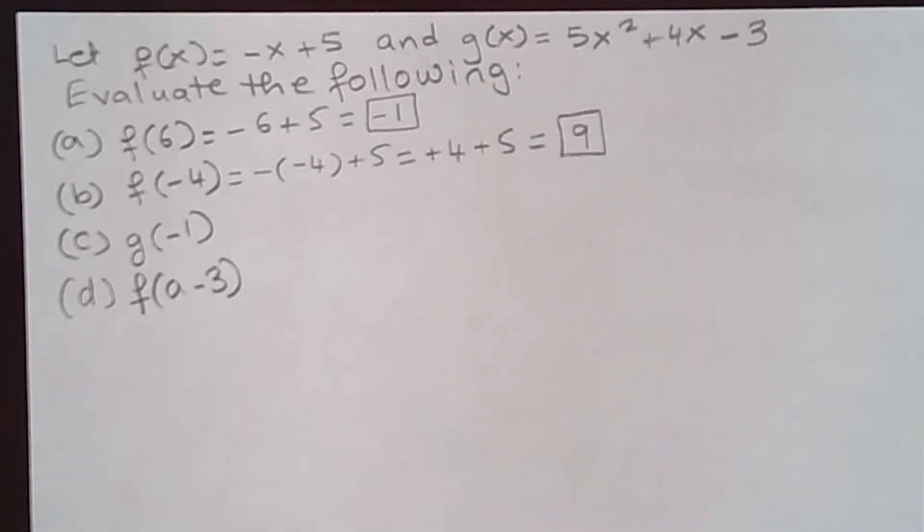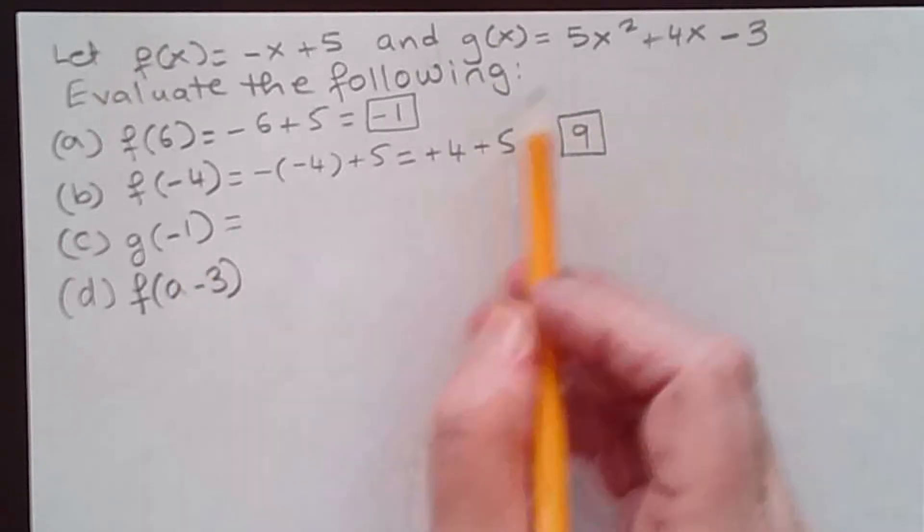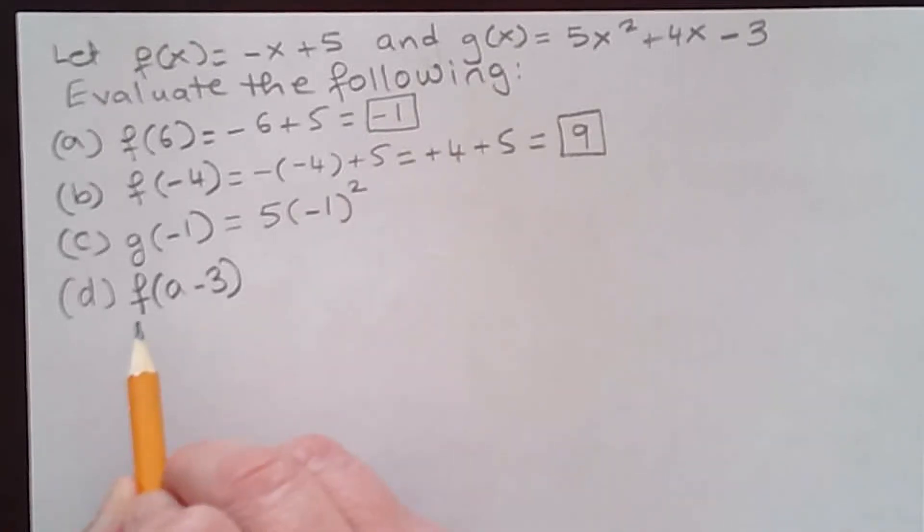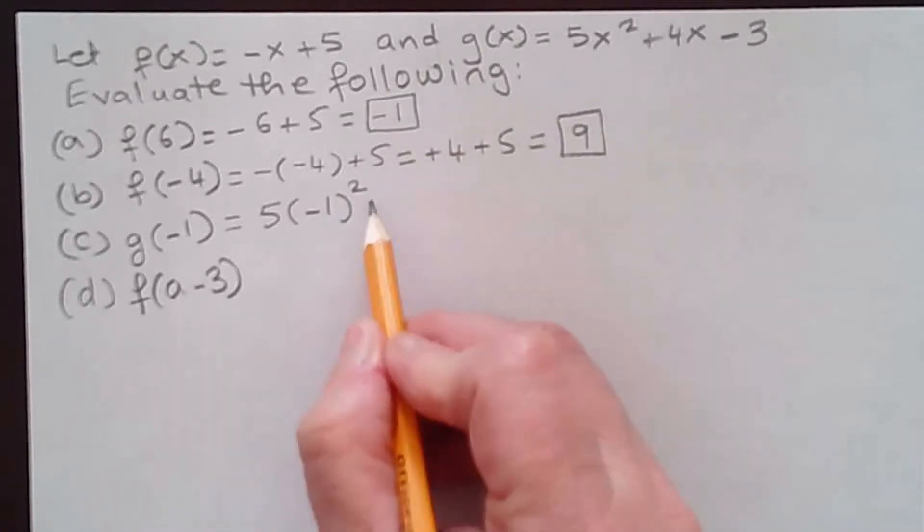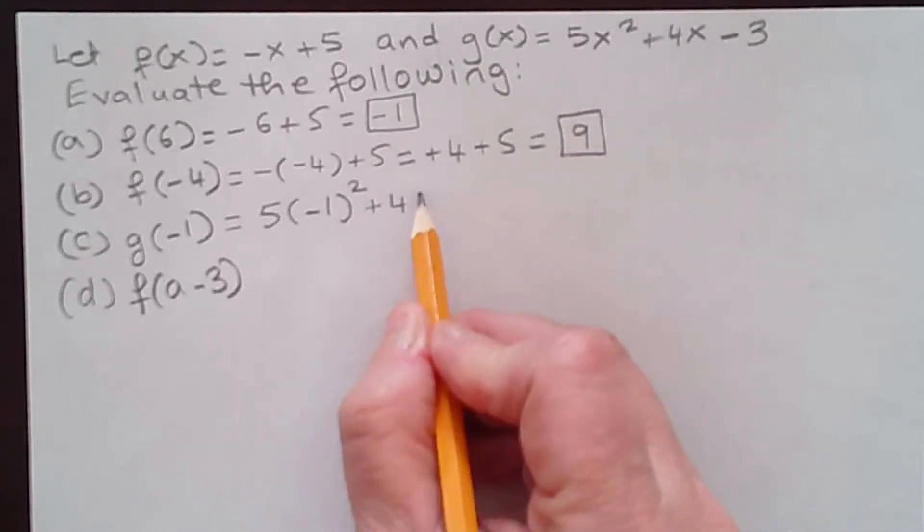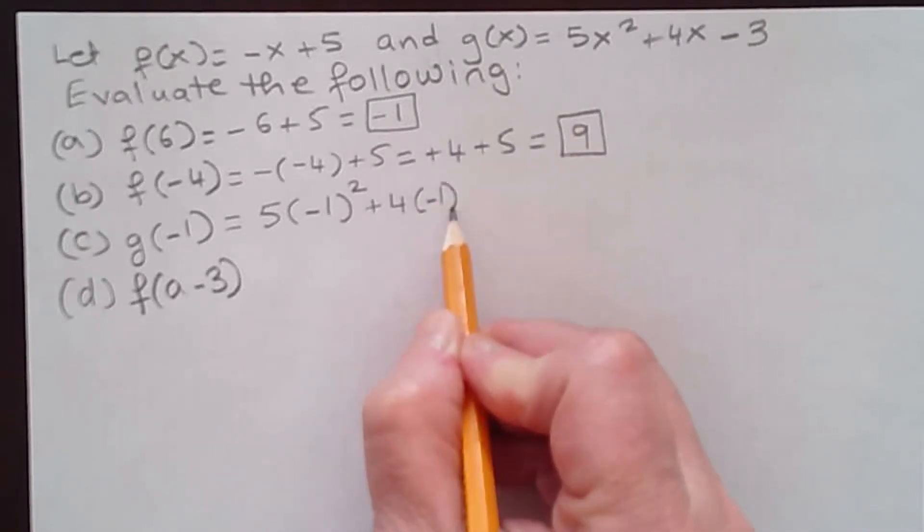Part C, they want me to evaluate g(-1). Now g is this function right here. Whenever I find x, I need to replace it with -1. So you have 5 times x², which is 5 times (-1)² plus 4 times x. Again, I have x here as well, so 4 times (-1) minus 3.